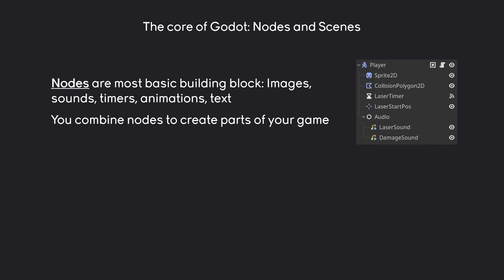For example, our player is going to look something like this at the end, where we start with a parent node — this one would cover the physics part, so the collisions most importantly. After that we have a Sprite2D, which is simply an image of the spaceship. After that we have a CollisionPolygon2D for the collision shape, a timer for the laser, a laser start position, and a couple of audio files. All of these combined are going to create the player ship.